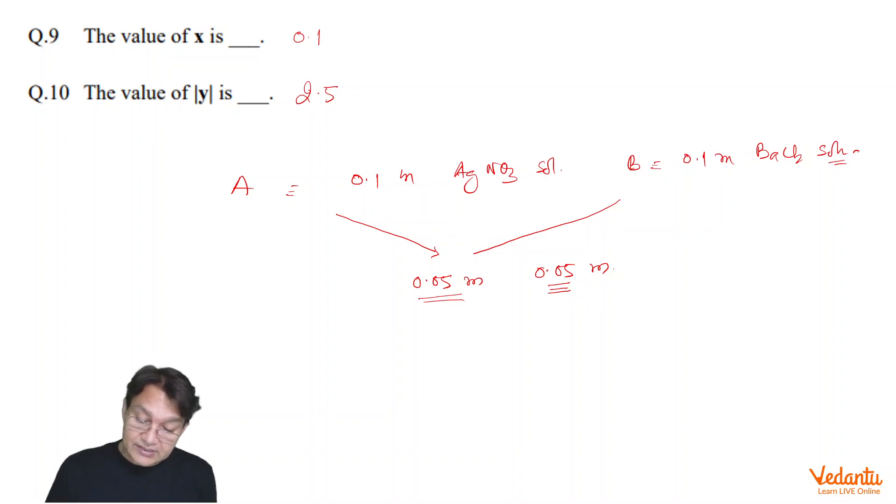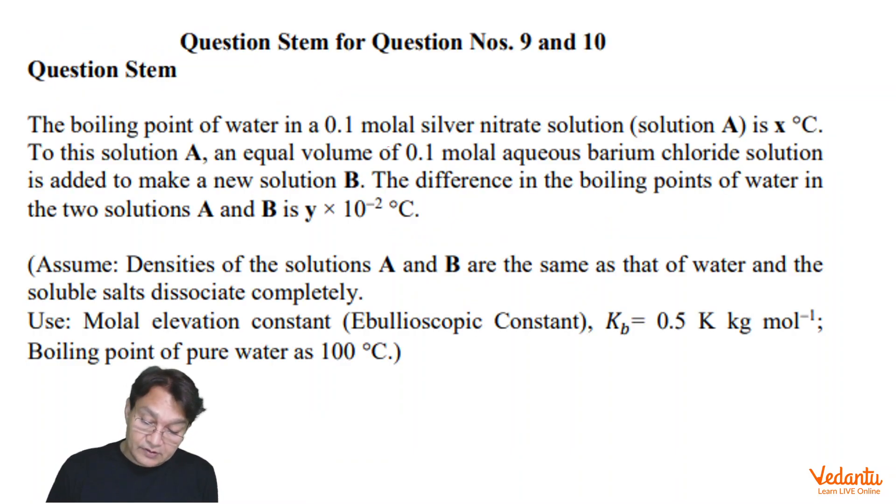Now, in this, first let us talk about this A. So, in this question, it has been given that 0.1 molal silver nitrate solution is this. And carefully assume densities of the solution A and B are the same as that of water and soluble salt dissociate completely.